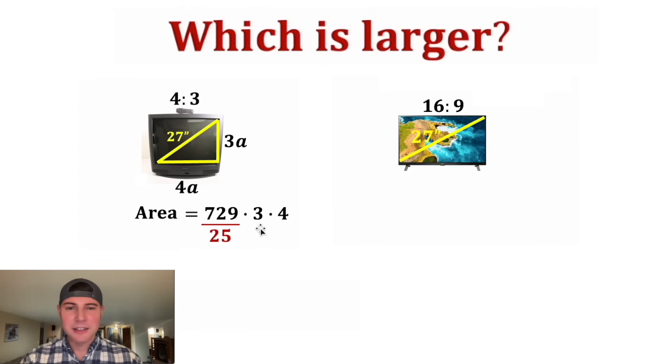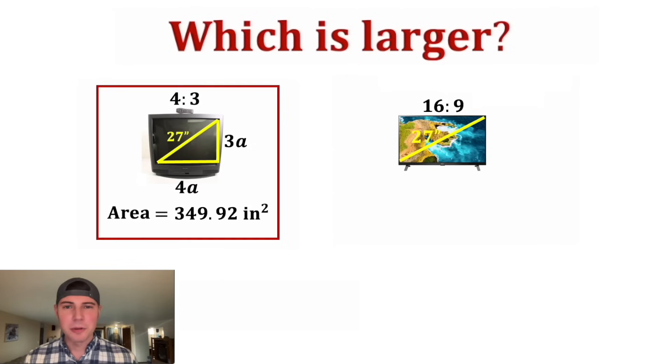And then 729 times 3 times 4 is 8748. And 8748 divided by 25 is 349.92. Let's give it a label of inches squared and put a box around it. Now we're ready to look at the other TV.